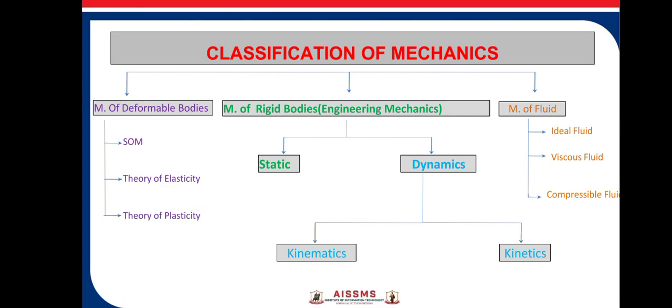Mechanics of rigid bodies, that is engineering mechanics, is classified into two main categories: statics and dynamics. Dynamics is further subdivided into kinematics and kinetics. Mechanics of fluids has three categories: ideal fluid, viscous fluid, and compressible fluid.